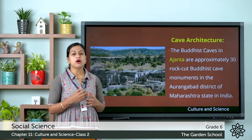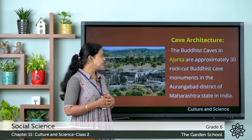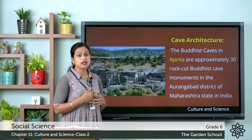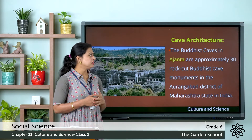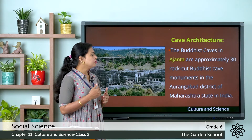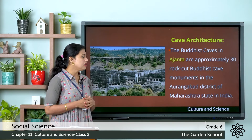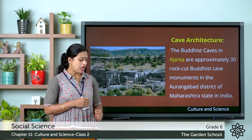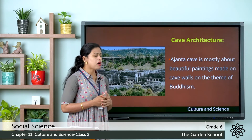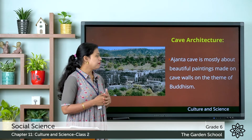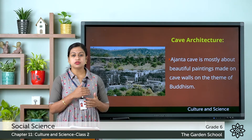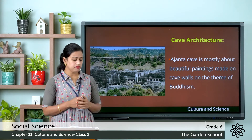Let us see a few important and famous cave architectures. The Buddhist caves in Ajanta — known as the Ajanta caves — are approximately 30 rock-cut Buddhist cave monuments in Aurangabad district. The Ajanta caves are mostly known for beautiful paintings made on cave walls on the theme of Buddhism.